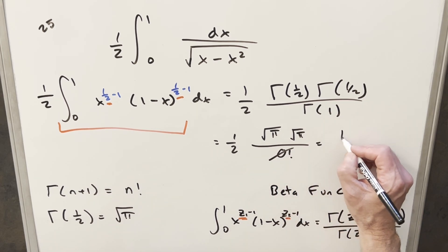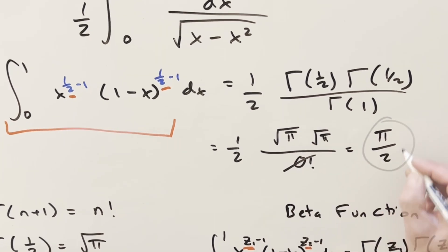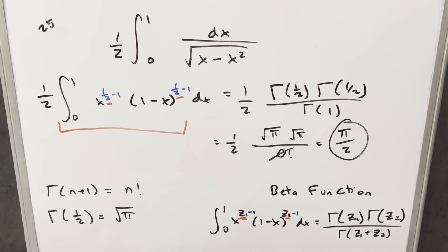Square root of pi times square root of pi is just pi. So for my final solution to this, we just get pi over 2. Okay, there you have it. Thanks everyone for watching. Have a good day.